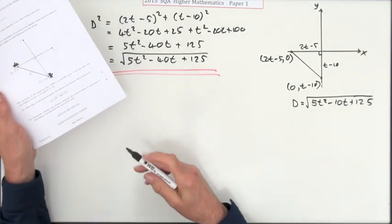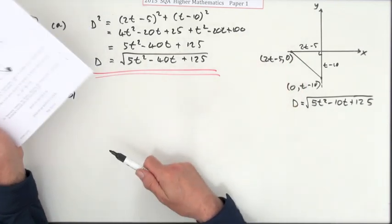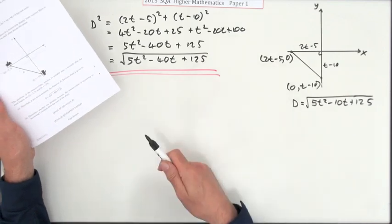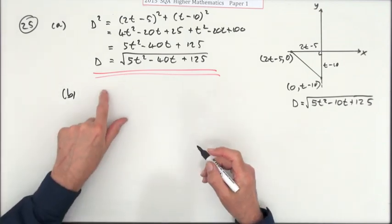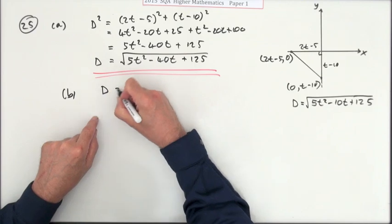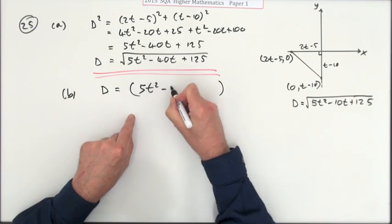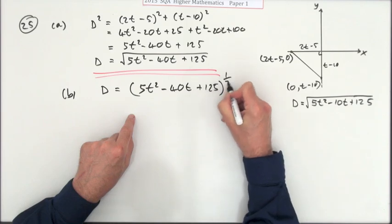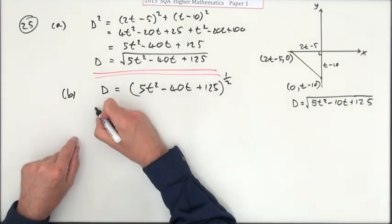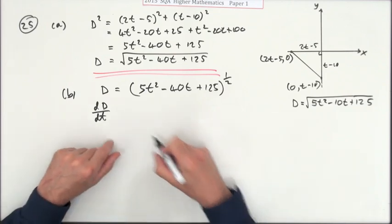Now part b: determine whether this distance between these motorcyclists is increasing or decreasing. That'll be a derivative five seconds after the start, so that's when t is 5. The first thing I want to do is differentiate that. Before I do that, I'll just express it this way: 5t squared minus 40t plus 125 to the power of a half. Now I can differentiate it.